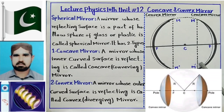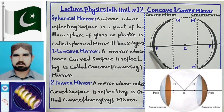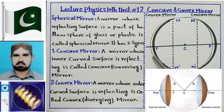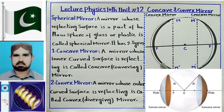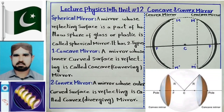Diagram के अंदर यह जो सफेद सतह है, यह reflecting दिखाई दी है। Convex mirror क्या है? A spherical mirror whose outer surface is reflecting। ऐसा mirror जिसकी बाहर वाली curved surface होती है, वो reflecting होती है, उसको convex mirror कहते हैं। अब हम mirror से related — convex है या concave है — मुख्तलिफ terms को define करेंगे diagram की मदद से।